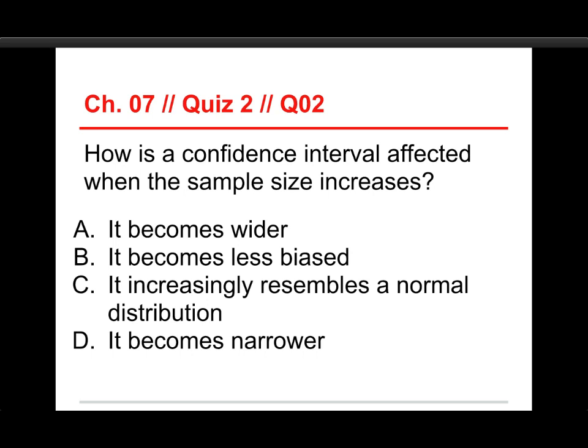Question 2, how is a confidence interval affected when the sample size increases? And the choices are A becomes wider, B becomes less biased, C it increasingly resembles a normal distribution, or D, it becomes narrower. Well, the answer is it becomes narrower, bigger sample, smaller confidence interval. It's a negative association.